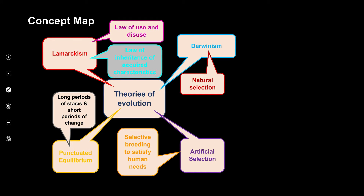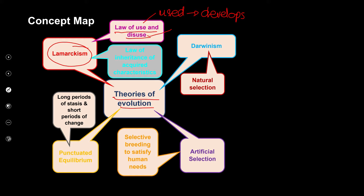Let's look at what we've covered so far. In the theories of evolution, we've looked at Lamarckism, put forward by Jean Lamarck, who had two laws. The first is the law of use and disuse: if an organ is used, it develops; and if it's not used, it can get smaller or even disappear.